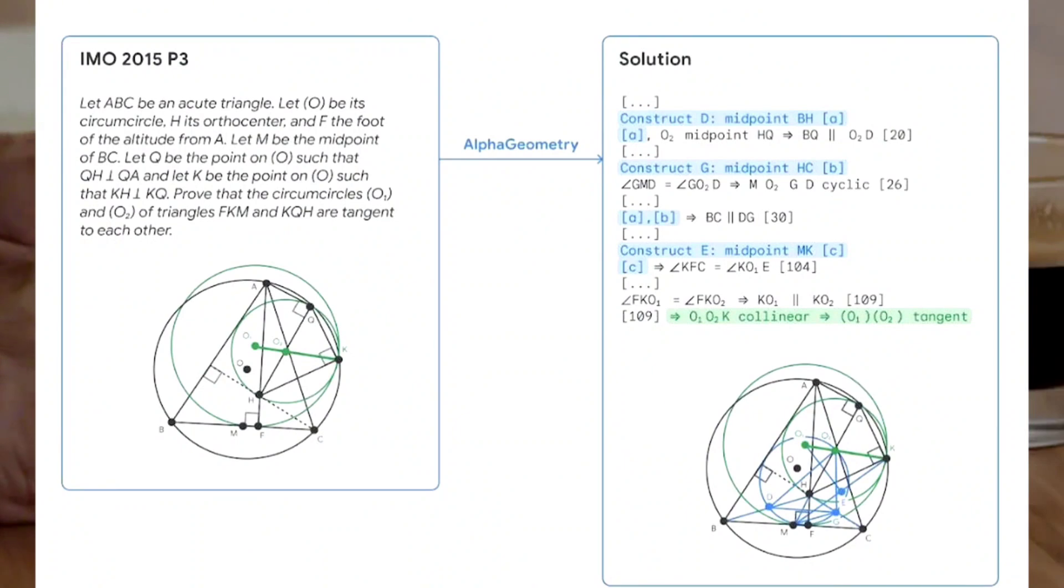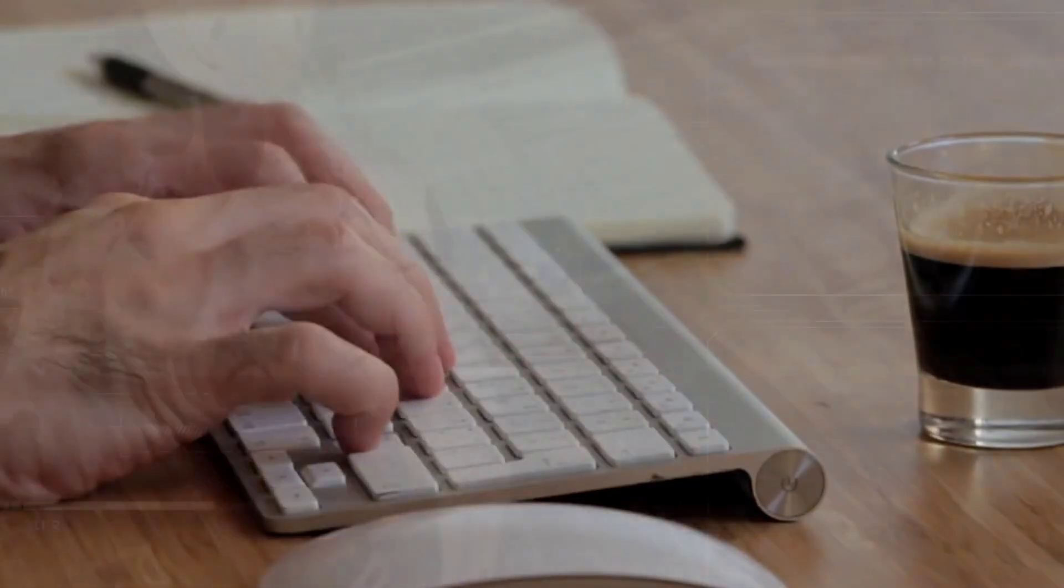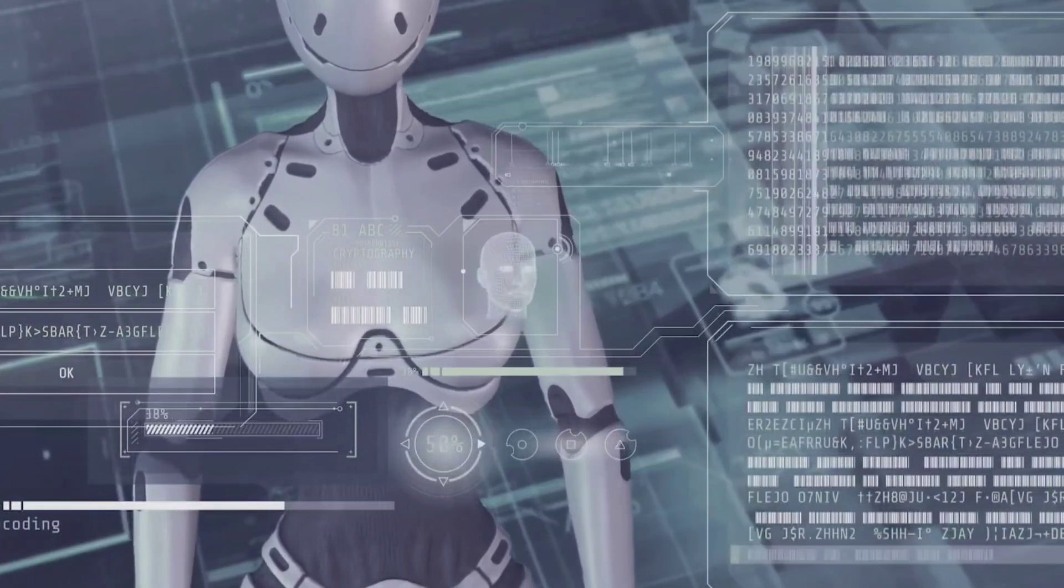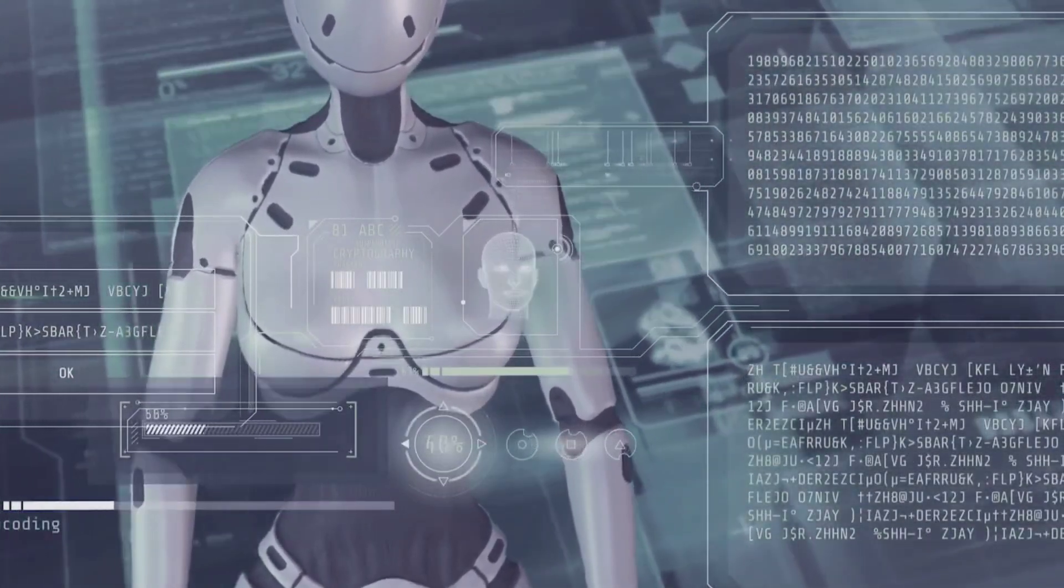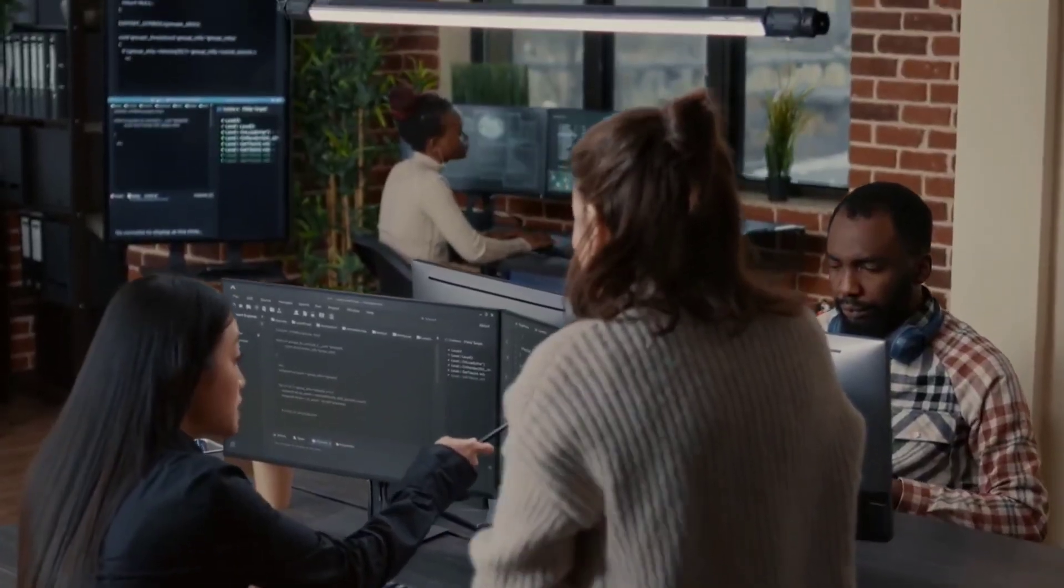Think of the neural language model as the intuitive sidekick. It's fantastic at spotting patterns and relationships in data, much like your friend who can effortlessly connect the dots in a complex story. This model can quickly predict potential solutions, making educated guesses about what could work. However, it sometimes falls short in rigorous reasoning or explaining its decisions.